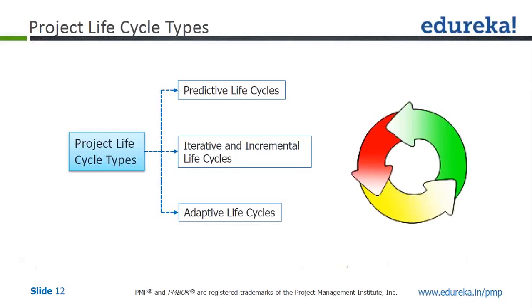Project life cycle types — there are three types: predictive life cycle, iterative and incremental life cycle, and the third one is adaptive life cycle.